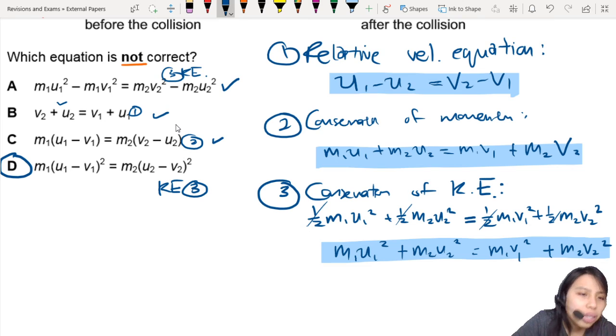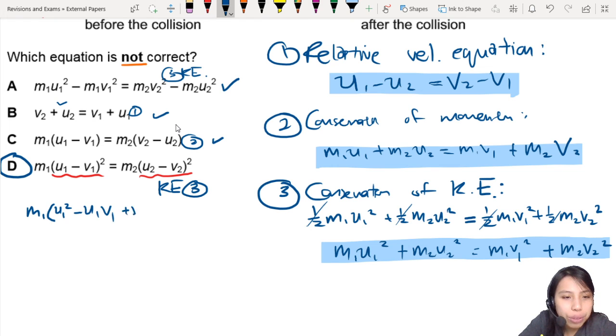You cannot just... One cannot simply group together the squares like this because if you expand this, this will become U1 square minus U1V1 plus V1 square. Like what? This is not correct. You cannot simply just factorize out the square because it doesn't work that way. Maths doesn't work that way. So the wrong answer is D. Equation is not correct.